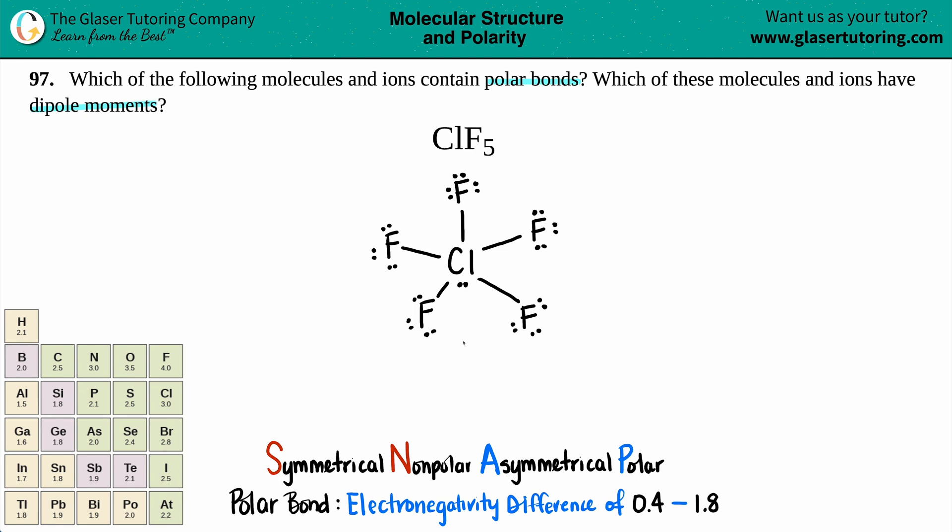Okay, now here is the Lewis structure. From here, we could find out if this molecule has polar bonds. Now, specifically, when they're talking about the actual bonds, whether it's polar or nonpolar, we're looking at a bond that is from one element to another element. So in this case, I see that I have five bonds. So you only have to pay attention to one of them.